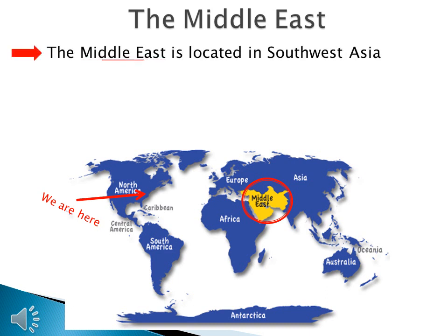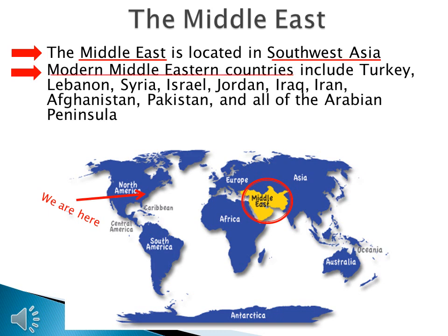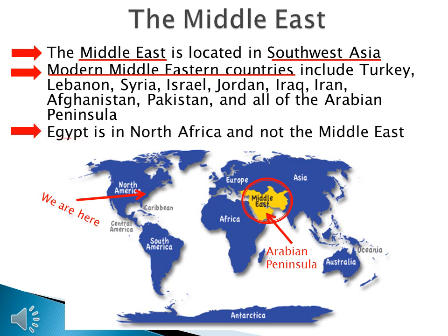The Middle East is in Southwest Asia. The modern countries in the Middle East include Turkey, Lebanon, Syria, Israel, Jordan, Iraq, Iran, Afghanistan, Pakistan, and all of the countries on the Arabian Peninsula. A lot of these places should sound familiar to you because we have a lot of things going on in this part of the world. We're also going to talk about Egypt. Now that you know where we will be looking, let's go to the next slide.